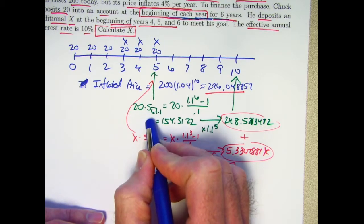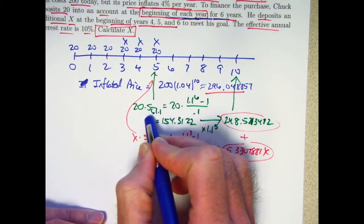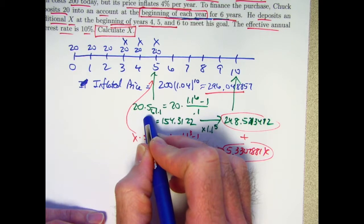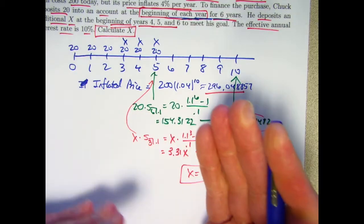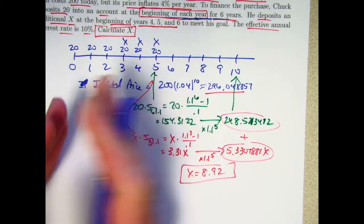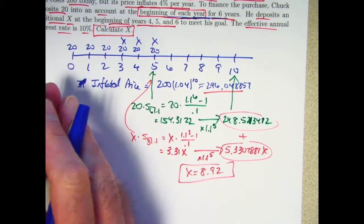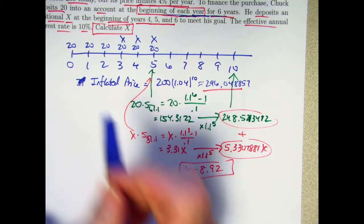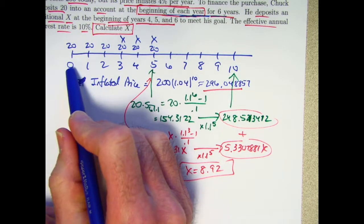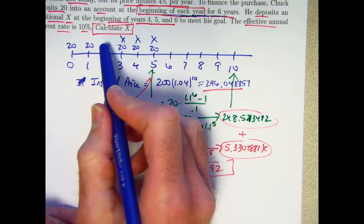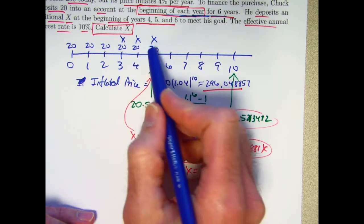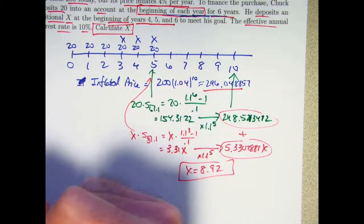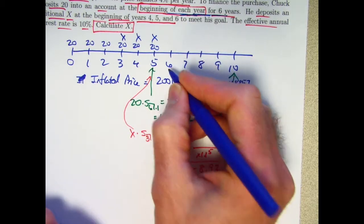the future value immediately after the last payment for that income stream would be 20 times the future value of a payment of one, six times evaluated immediately after the last payment. And I've said you can also think of annuity immediates in terms of, if you're starting at time zero, those payments are at the end of the years.